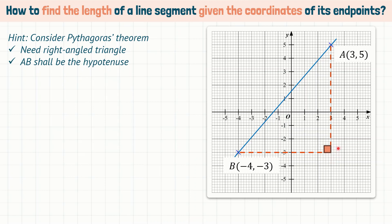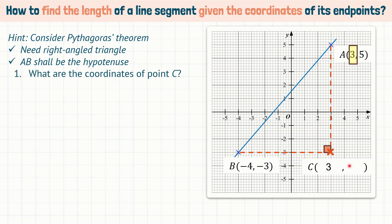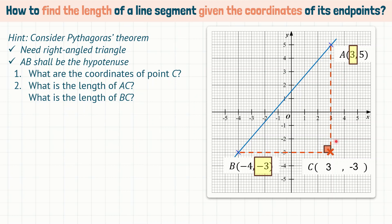Let me call this new point C. The x-coordinate of point C follows the x-coordinate of point A, which is 3. The y-coordinate of point C follows the y-coordinate of point B, which is negative 3. To apply Pythagoras theorem — A² + B² = C² — we need to know the length of AC and the length of BC. AC is a vertical length and BC is a horizontal length.